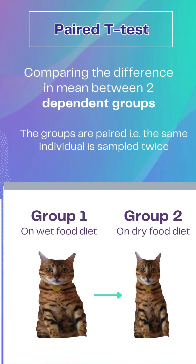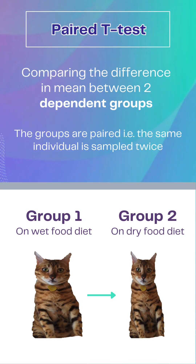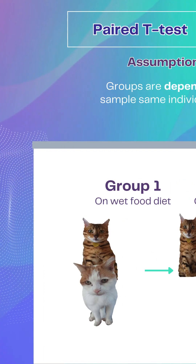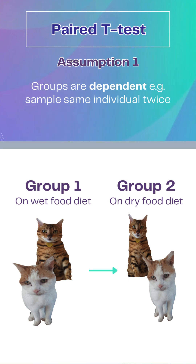In contrast, a paired t-test is used to compare the mean values between two dependent groups. This test has two additional assumptions. The first is that groups are dependent — each pair of observations needs to be related, such as measuring the weight of the same cat before and after a change in diet.